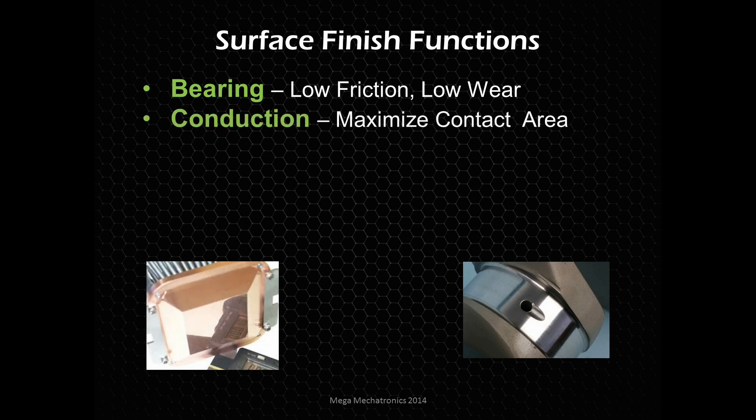Now we're looking at conduction — conduction of heat. In this application we need to maximize the surface area, so we need to minimize those peaks and those valleys. You see in the picture there is probably a computer heat sink that has been polished extremely to a very fine polish — it's almost like a mirror. That's going to improve the heat conduction and reduce the amount of thermal paste you need to use, because that thermal paste is not as good a conductor as the copper or that base material.